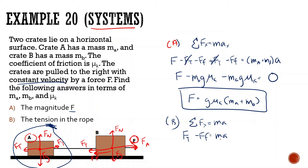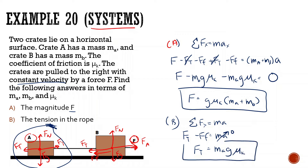Acceleration is zero because it's constant velocity, so force of tension equals force of friction — which is mAg·μk. We could also find force of tension by looking at the B block, but it would be more difficult since there are more forces there.